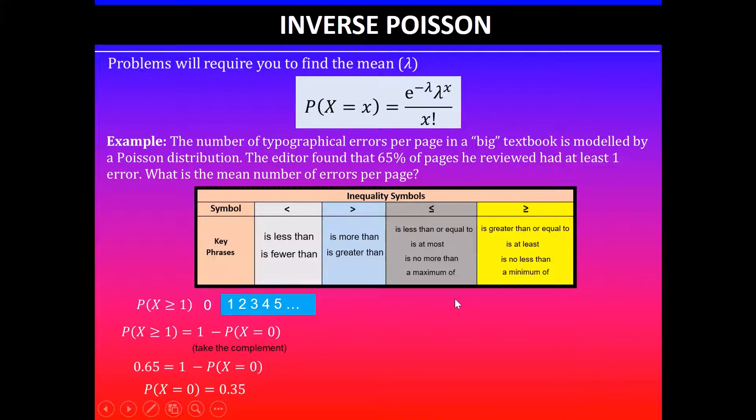Using the formula I can start substituting the information that's given. In this case I know that the probability when x is equal to zero is 0.35, so substituting x value of zero.